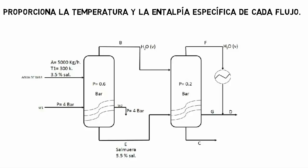The steam condenses at 4 bar, and the condensate is extracted at the saturation temperature corresponding to this pressure. The heat generated by the condensing steam in the tubes causes the water to evaporate from the brine solution at a constant pressure of 0.6 bar in the evaporator. The brine contains 5.5% salt at the outlet.